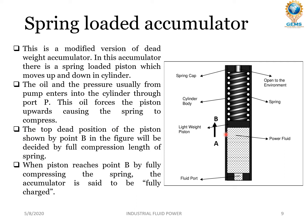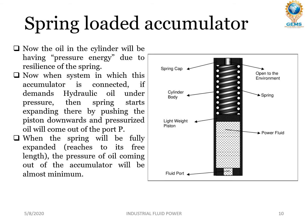The incoming oil forces the piston upwards, causing the spring to compress. When high pressure oil enters, it makes the piston move upward so that the spring gets compressed. The top position of the piston, shown by point B in the figure, is decided by the full compression length of the spring. When the piston reaches point B by fully compressing the spring, the accumulator is said to be fully charged. The oil in the cylinder now has pressure energy due to the resilience of the spring.